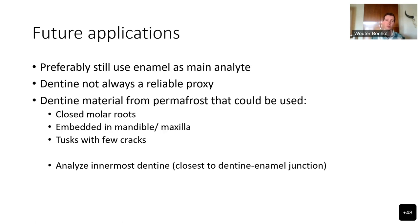If you use proboscidian tusks, try to use tusks that are very well preserved with as few cracks as possible. And always, if you analyze dentine, go for the innermost dentine — the dentine closest to the dentine-enamel junction, furthest away from surfaces where strontium could have leached into the dentine from surrounding soils.